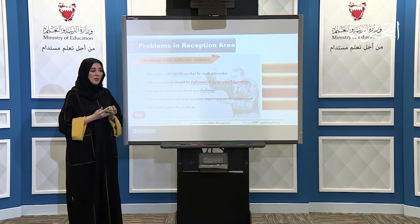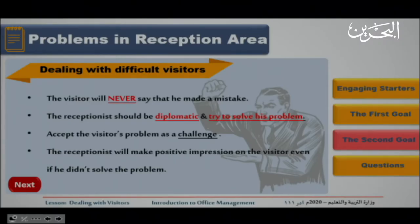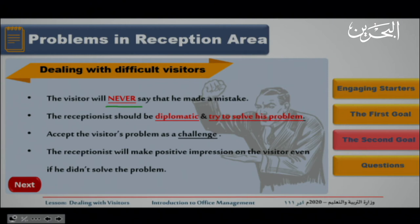Dealing with difficult or angry visitors: the visitor will never admit that they made a mistake, even if they know they are wrong. The receptionist should be diplomatic and try to solve the problem. Number three, accept the visitor's problem as a challenge to show how capable you are of solving it. Most importantly, the receptionist must still maintain a positive image about the company and herself, even if she wasn't able to solve the problem.